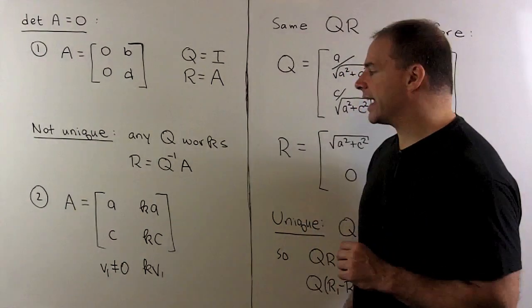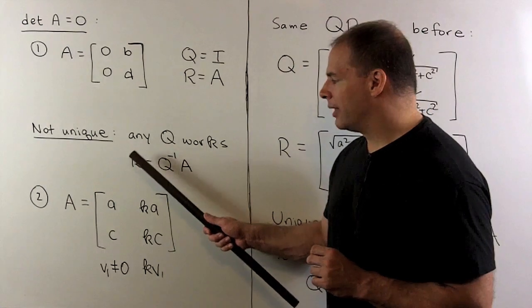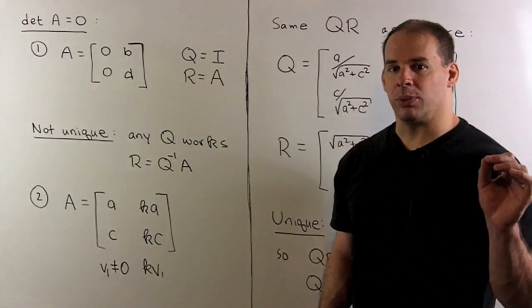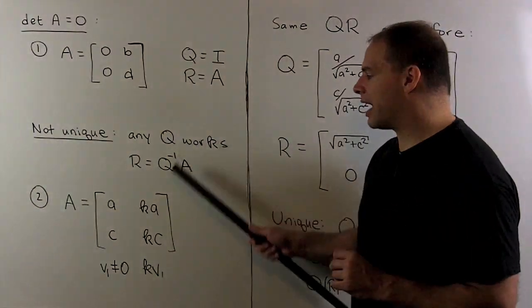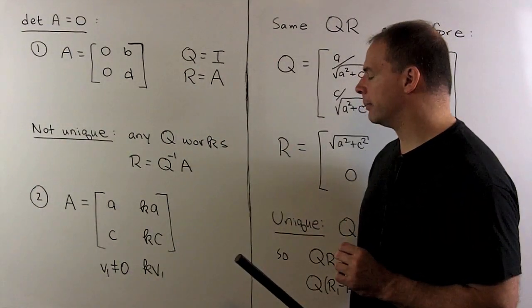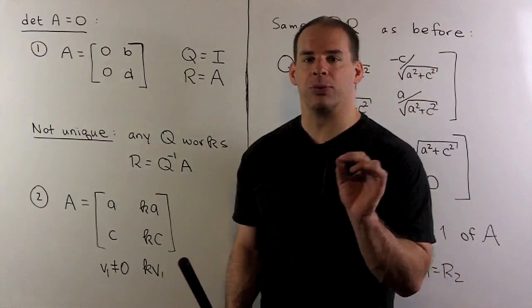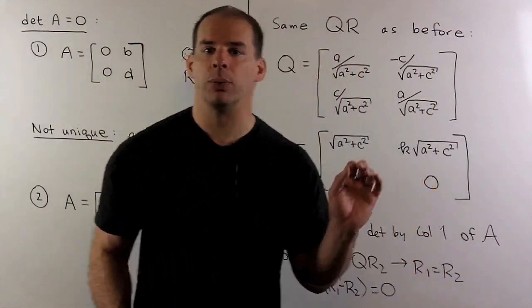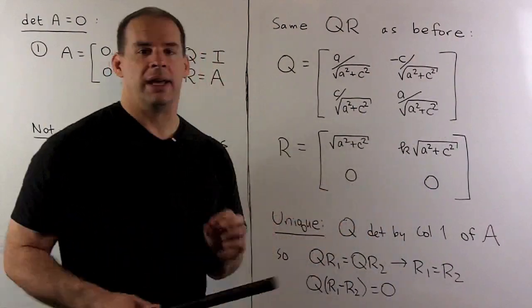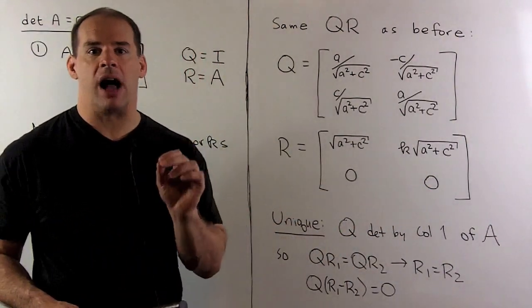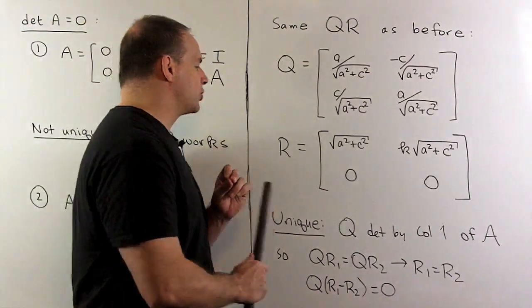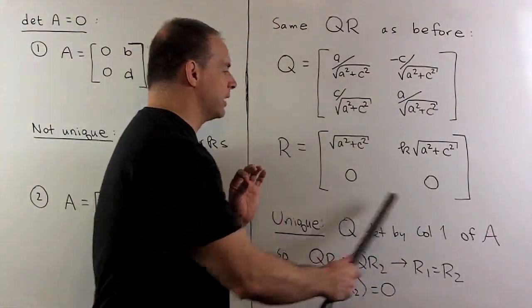In our second case, we assume the first column is not exactly equal to 0. For the determinant to equal 0, the second column vector must be a multiple of the first column. Pushing that through our equations, Q depends entirely on the first column, and R collapses to the singular form when the determinant equals 0.